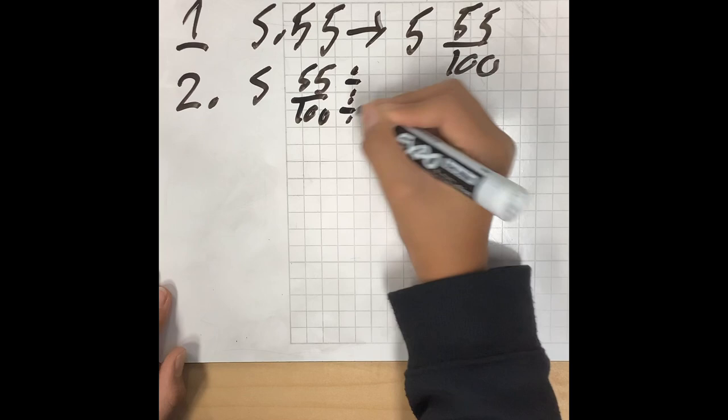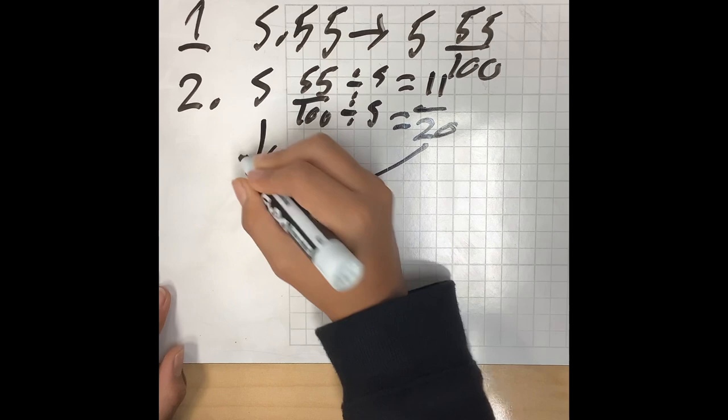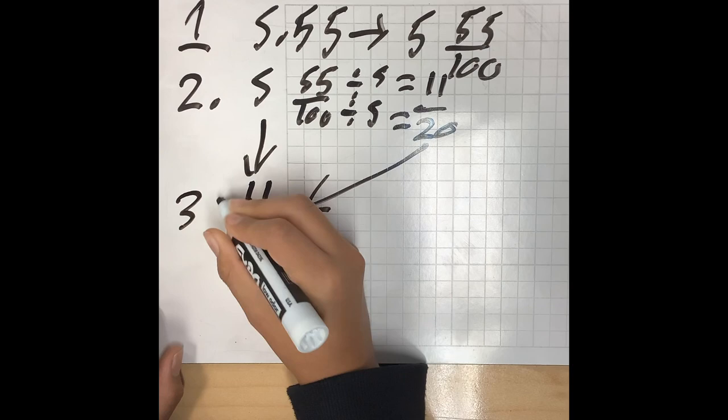Divide that by 5 to get 11 over 20. Take that to simplify and then we'll turn that into 5 and 11 twentieths.